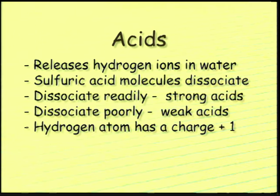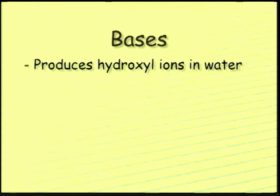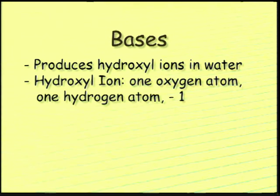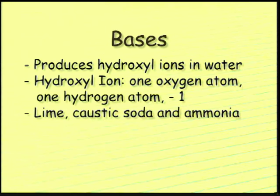A hydrogen atom has a charge of plus one. A base is any substance that produces hydroxyl ions when it dissociates in water. A hydroxyl ion is comprised of one oxygen atom and one hydrogen atom and has a charge of negative one. Lime, caustic soda, and common household ammonia are examples of bases.